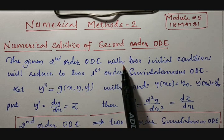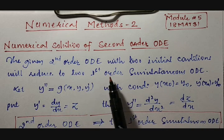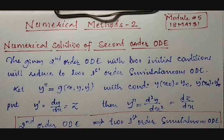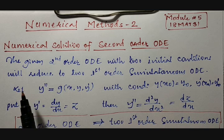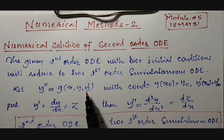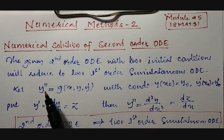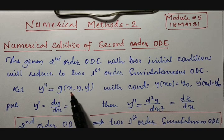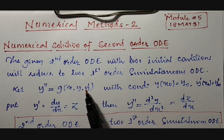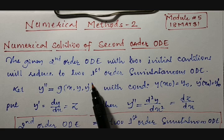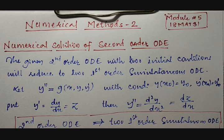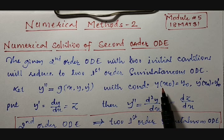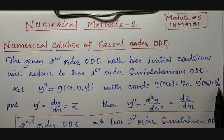The given second order ordinary differential equation with two initial conditions will be reduced to first order simultaneous equations. One second order differential equation with its initial conditions has to be split into two sets of first order simultaneous differential equations. Let y'' = g(x, y, y'), with initial conditions y(x₀) = y₀ and y'(x₀) = y₀'.